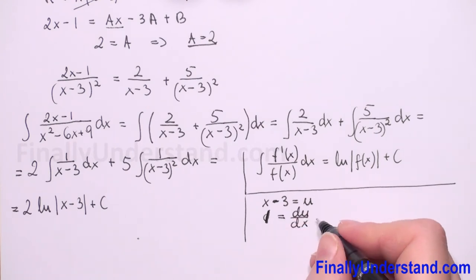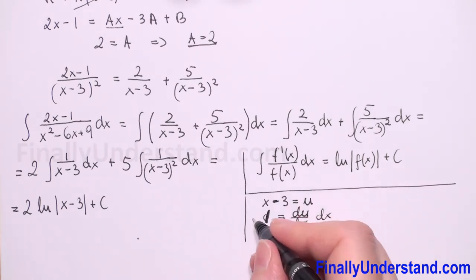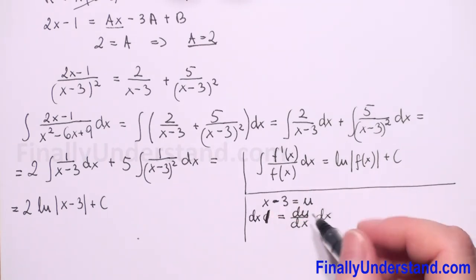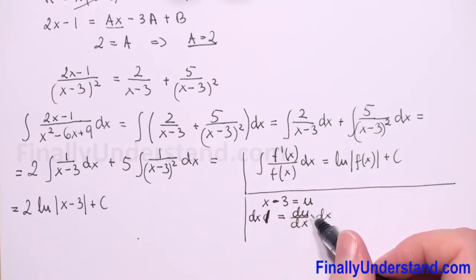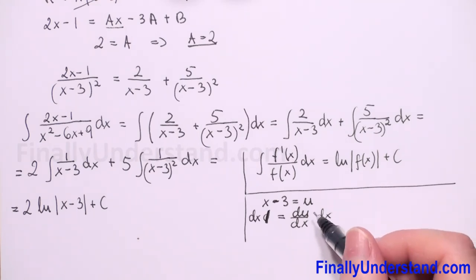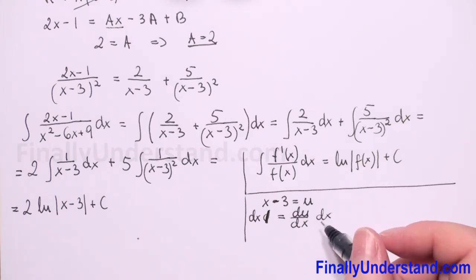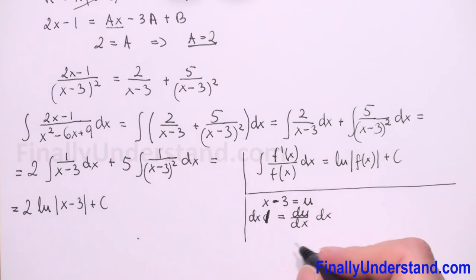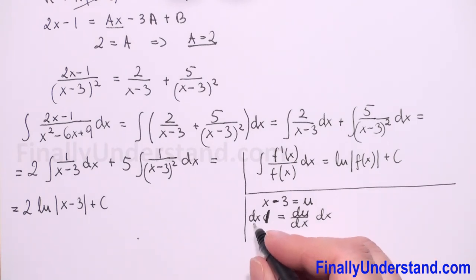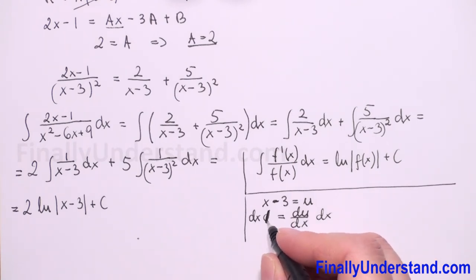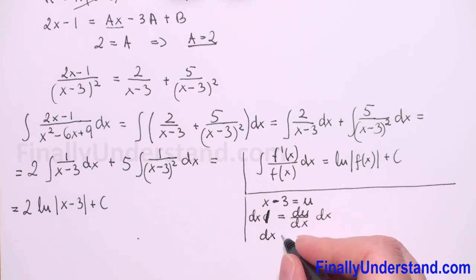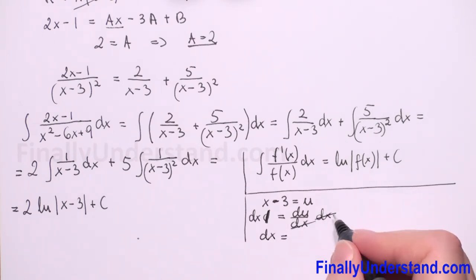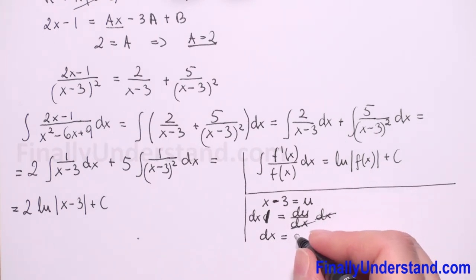We take the derivative of both sides with respect to x. The derivative of x is 1 and the derivative of the constant is 0, so du/dx equals 1. Multiplying both sides by dx gives du equals dx. When we substitute we cannot mix u and x in one expression.